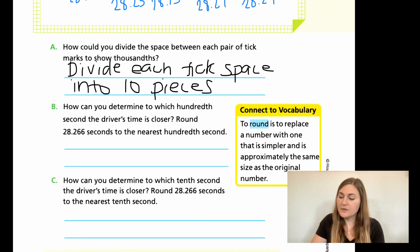For B, how can you determine to which hundredth second the driver's time is closer? So it's asking us to round 28.266 to the nearest hundredth. I'm going to be rounding to the hundredths, which means I go next door and look at that number. The six in the thousandths place is big enough to bump the six hundredths into a seven. So it would be 28.27. Whatever place value it's asking us for, that's going to be the last digit that you write. So I'm ending in the hundredths place value.